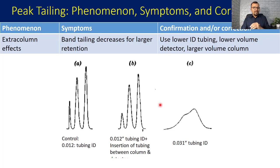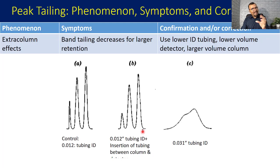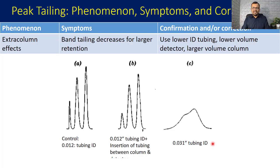These are representative examples of what can happen because of the inner diameter of the peak tubing. Chromatogram A is a control with tubing of 0.012 inch. Chromatogram B is again with 0.012 inch but with an insertion of tubing between column and detector, resulting in a slight increase in extra column volume and slight increase in peak tailing or broadening. Chromatogram C uses an inner diameter of 0.031 inch, and you can see how the peak shape gets disturbed.